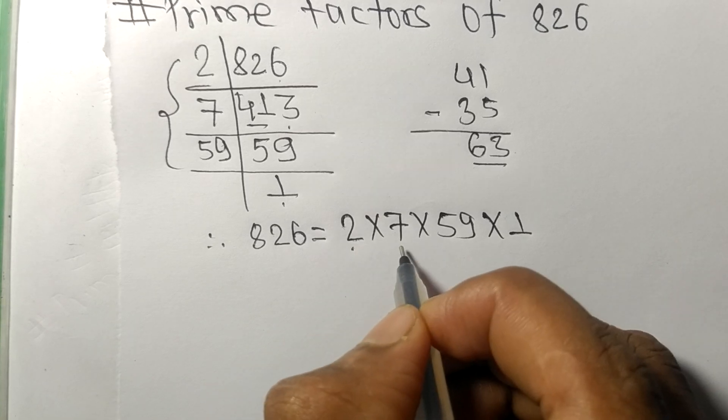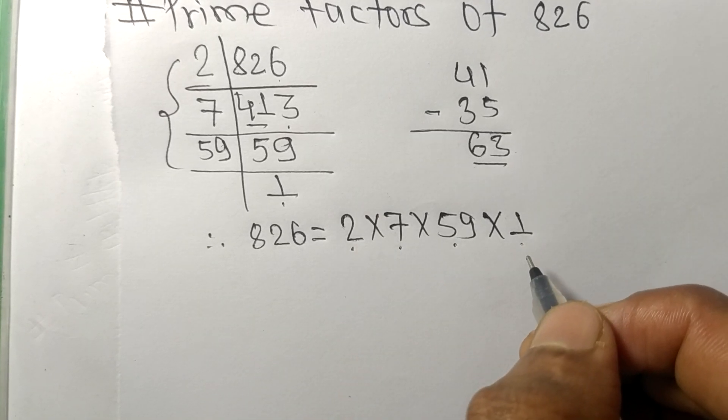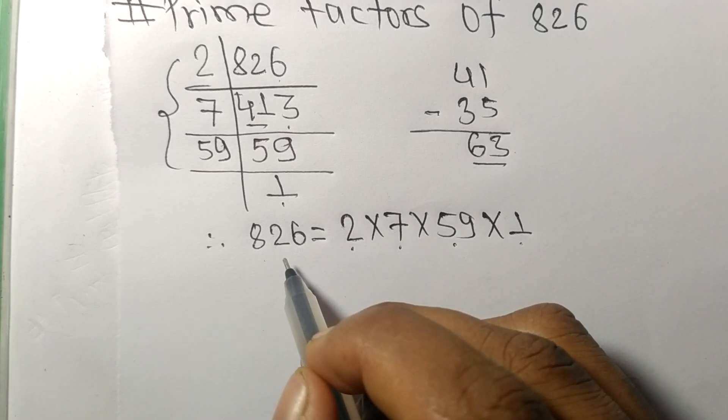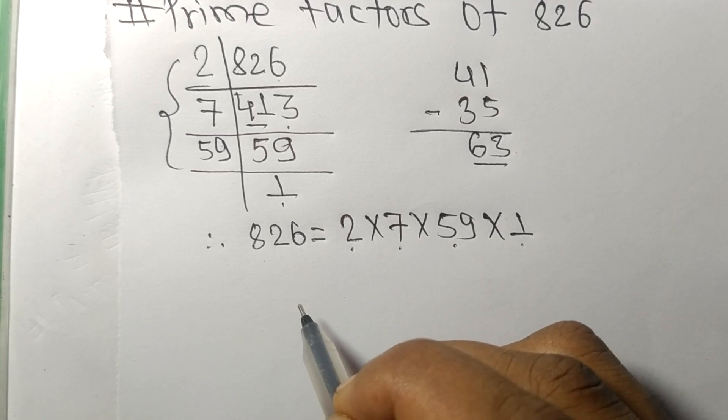So 2, 7, 59, and 1 are the prime factors of 826. So this much for today and thanks for watching.